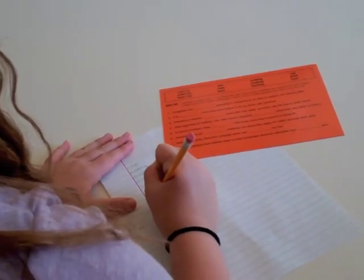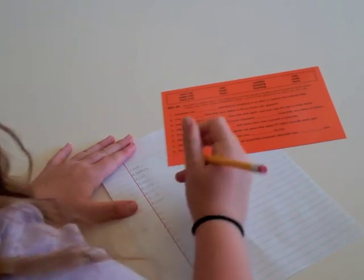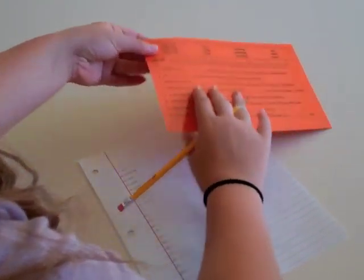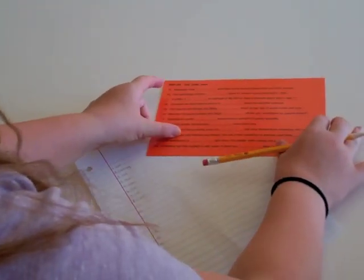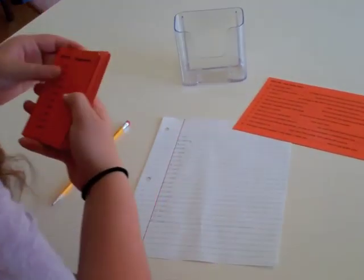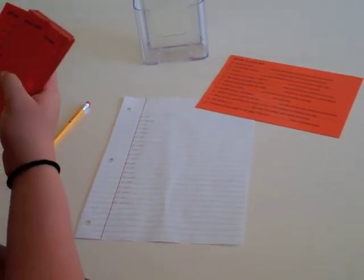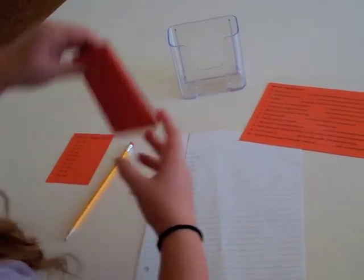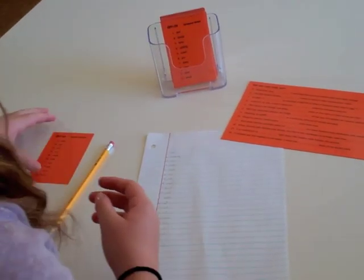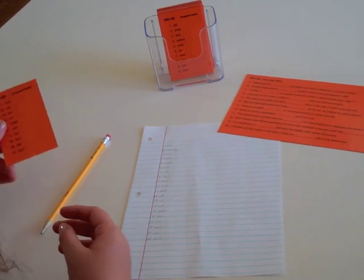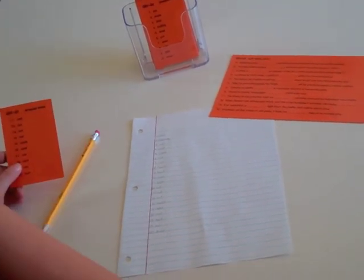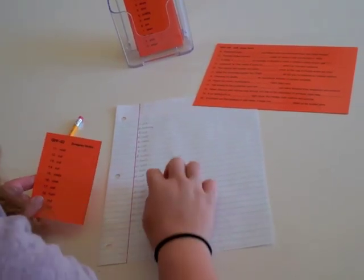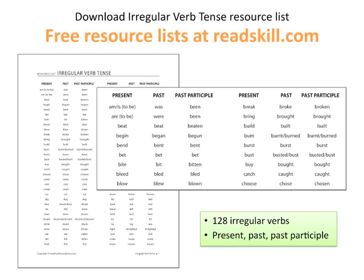All Reading Manipulatives writing cards are printed double-sided and laminated. They begin with a mini lesson and instruct students on how to transfer their answers to a sheet of paper. Each set comes with answer keys and a reproducible student checklist. Cards can be done in any order, and students need to track the ones they have completed. A comprehensive irregular verb tense resource list can be downloaded from our website.